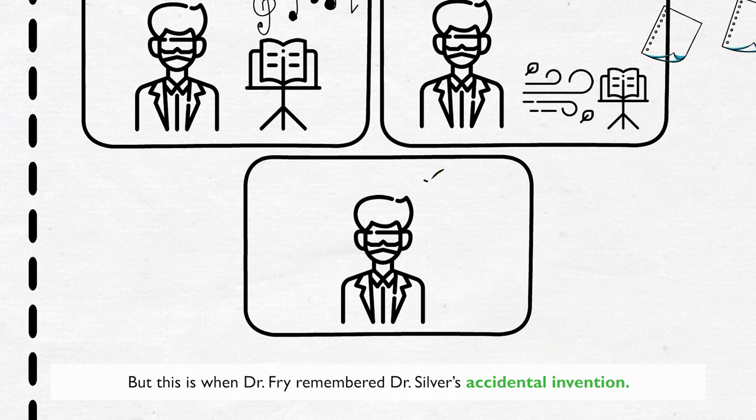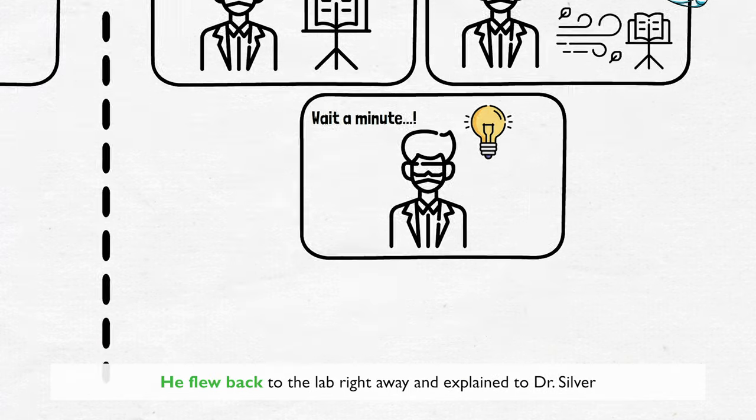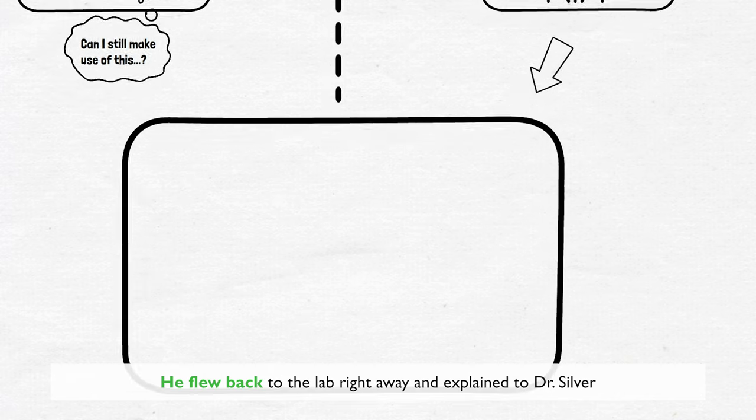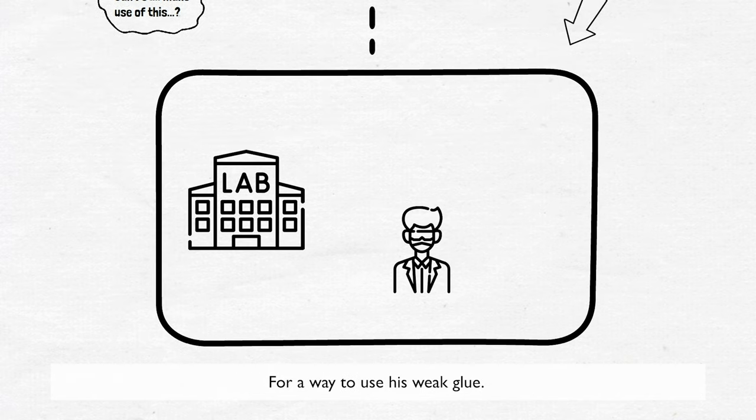But this is when Dr. Fry remembered Dr. Silver's accidental invention. He flew back to the lab right away and explained to Dr. Silver a way to use his weak glue.